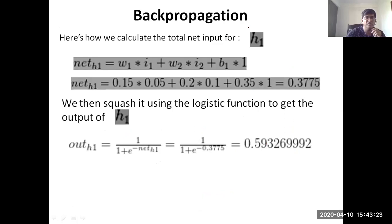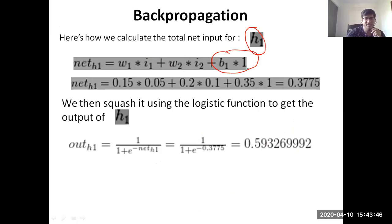In the forward pass, we calculate the net input for each hidden unit. For h1, the net input is the summation of xi times wi. Since we have two inputs, the formula becomes w1·i1 + w2·i2, and since we include a bias, we add the bias weight b1. The bias is always a dummy input with value 1, so only the bias weight b1 appears.